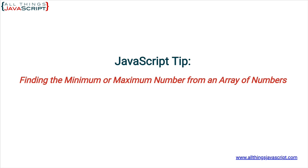When I was new to JavaScript I would have used a loop, which is probably the most difficult approach. The Math object in JavaScript has a min and a max method that is used to get the minimum or maximum number from a list of numbers. Let's look at that first, and then we'll take a look at how we can use this with an array.